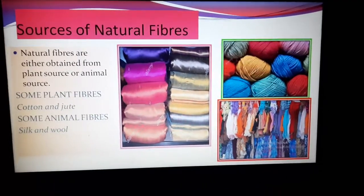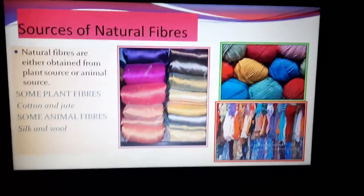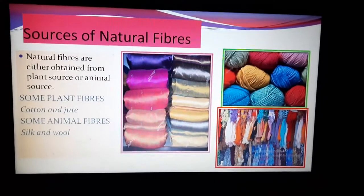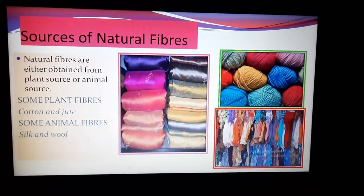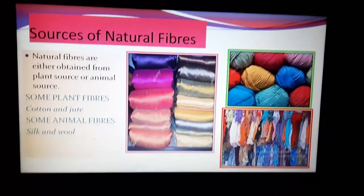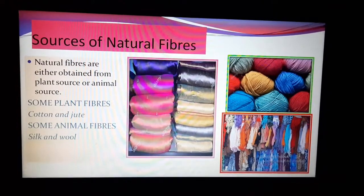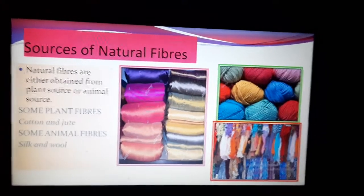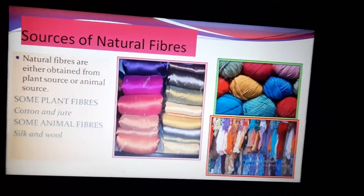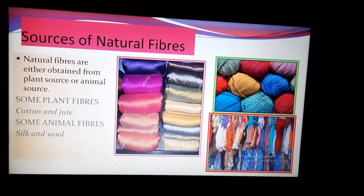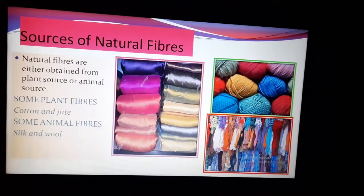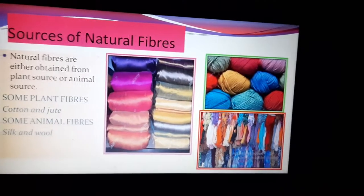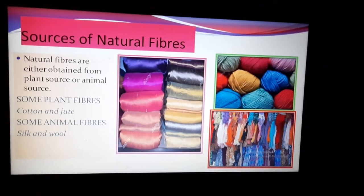Now, sources of natural fibers. The sources of natural fibers are natural — we get these fibers naturally, either from plants or from animals. Some plant fibers are cotton and jute; from cotton and jute plants, we get natural fibers which help us make fabrics. Some animal fibers are silk and wool. Silk we get from silkworms, and wool we get from the hair of sheep, camel, and different other animals. We will discuss all these fibers more in the next video class.